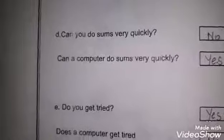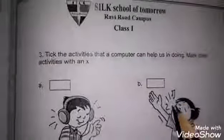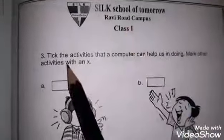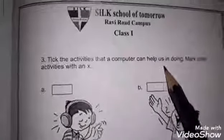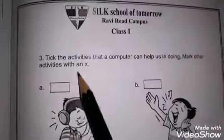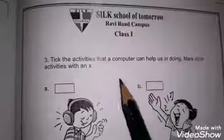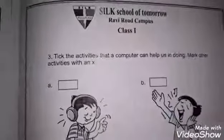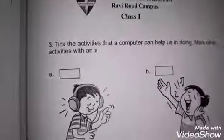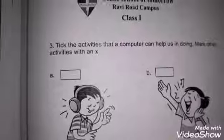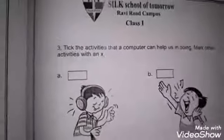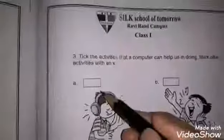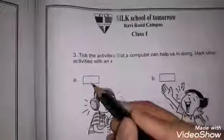Now see the next page, page number 87. Tick the activities that a computer can help us do. Mark other activities with an X, a cross. Number A: Music. We can listen to music on the computer, so we will do a tick.